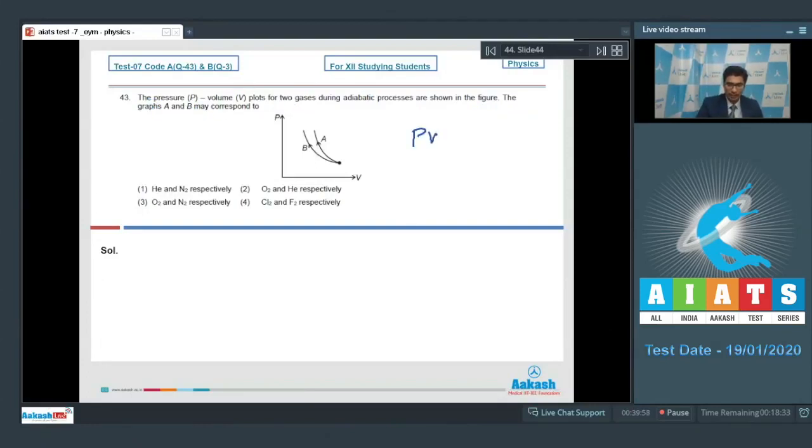Dear students, for an adiabatic process PV to the power gamma is a constant. The slope of such a graph, that is DP by DV, is equal to minus gamma P by V.